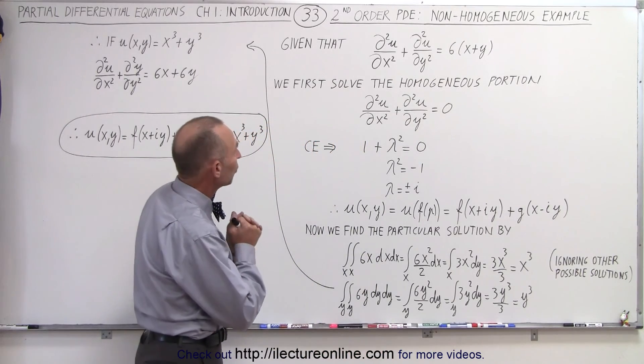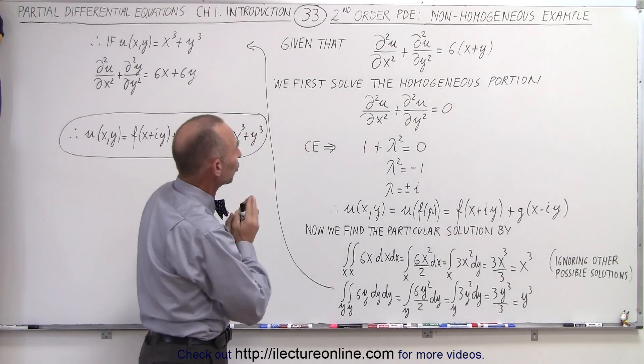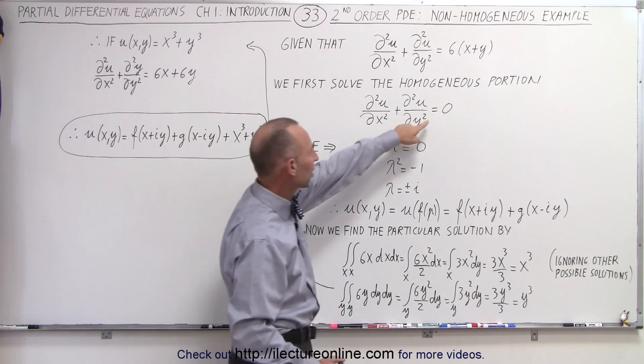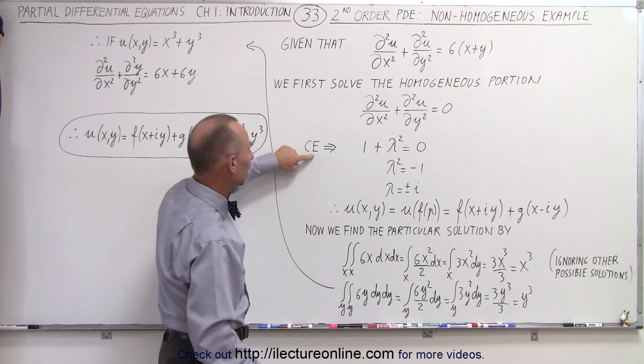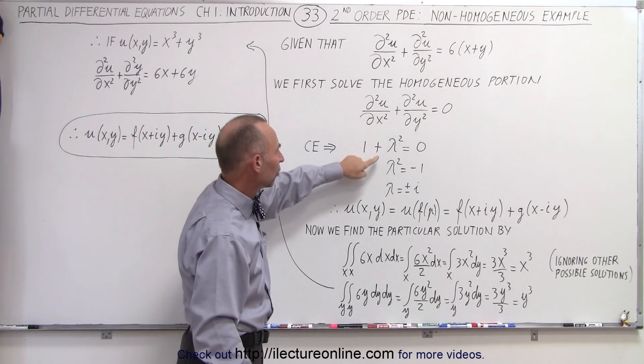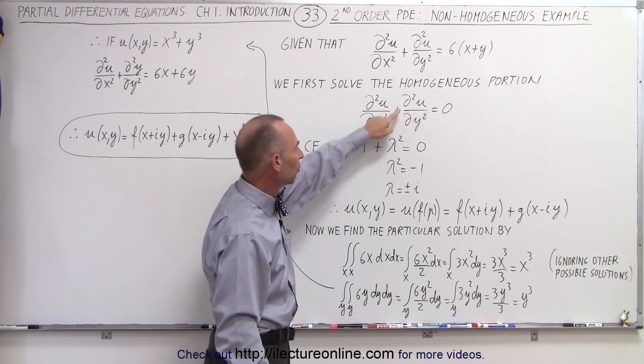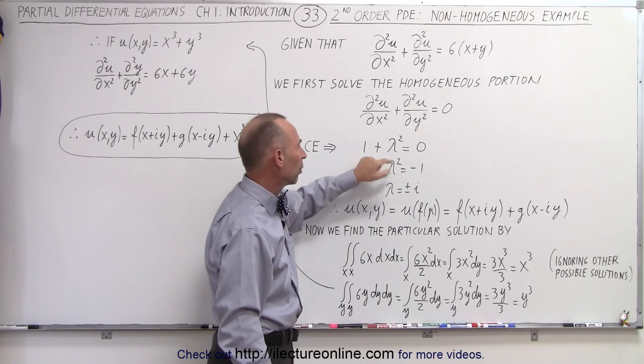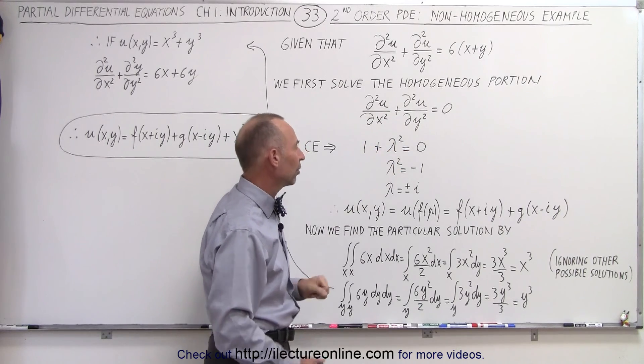So first what we're going to do is solve the homogeneous portion of that equation by setting the right side equal to 0. We find the characteristic equation, so the first constant 1 goes over here, the middle constant is 0, and the third constant is a 1, so write 1 times lambda squared equals 0.